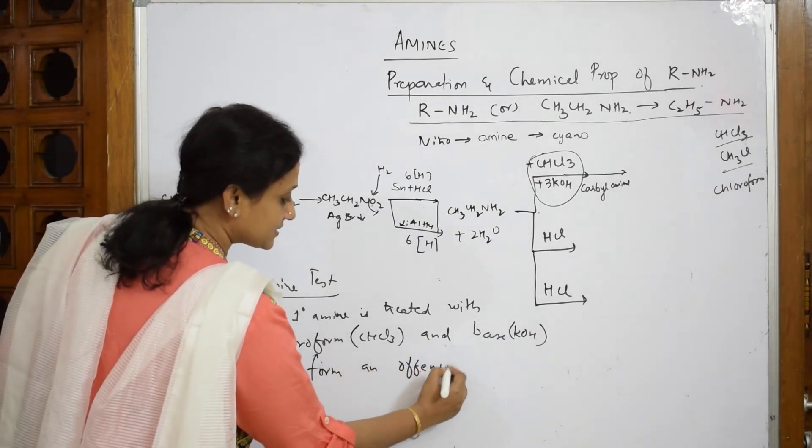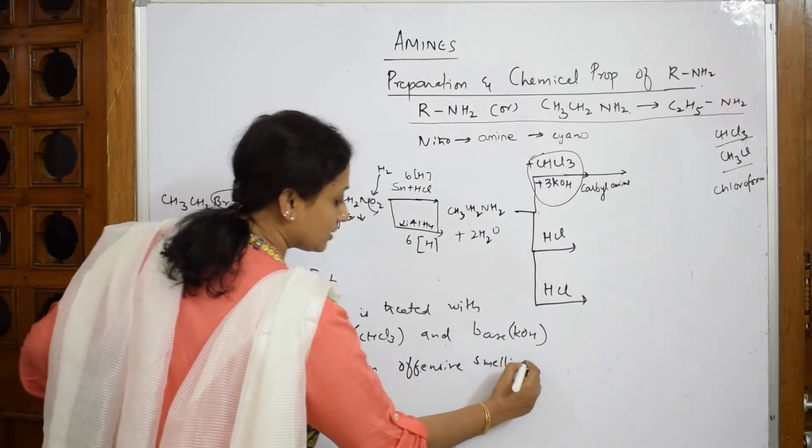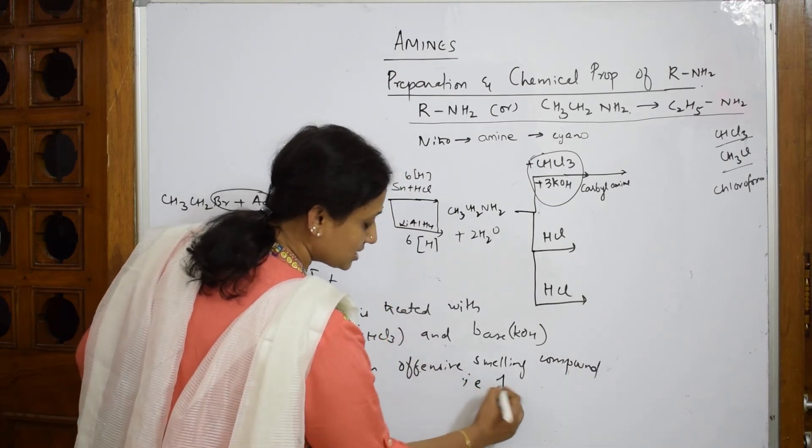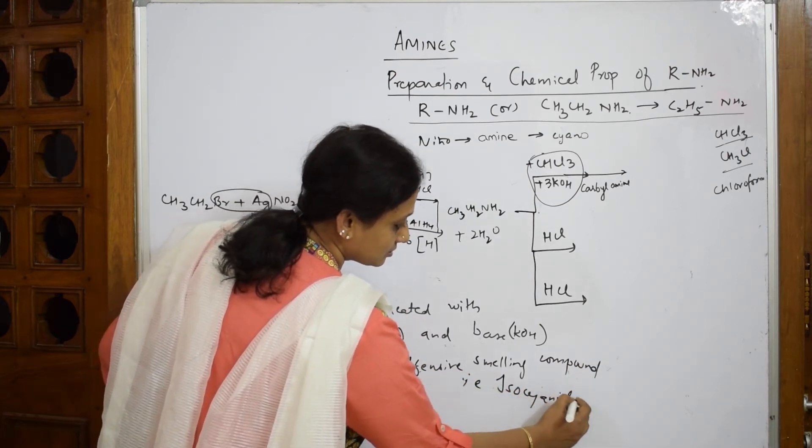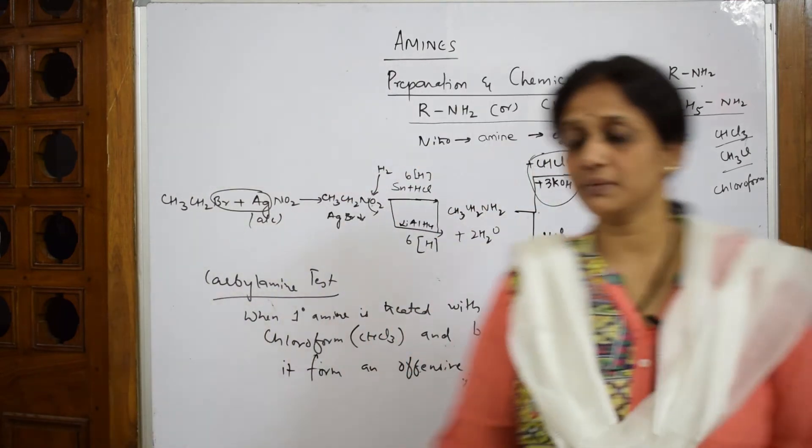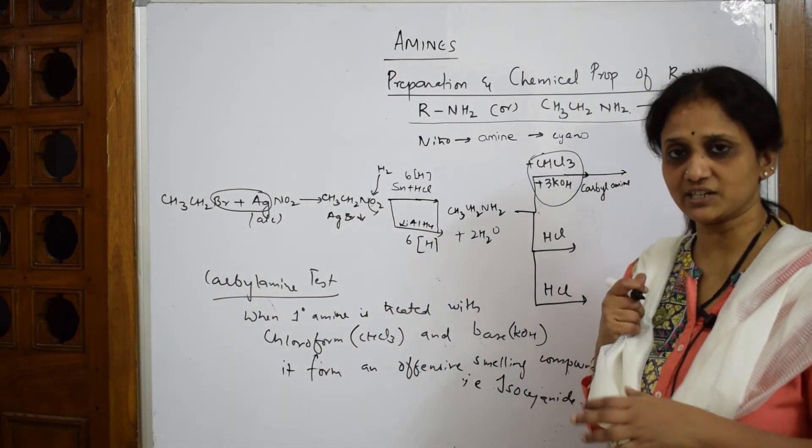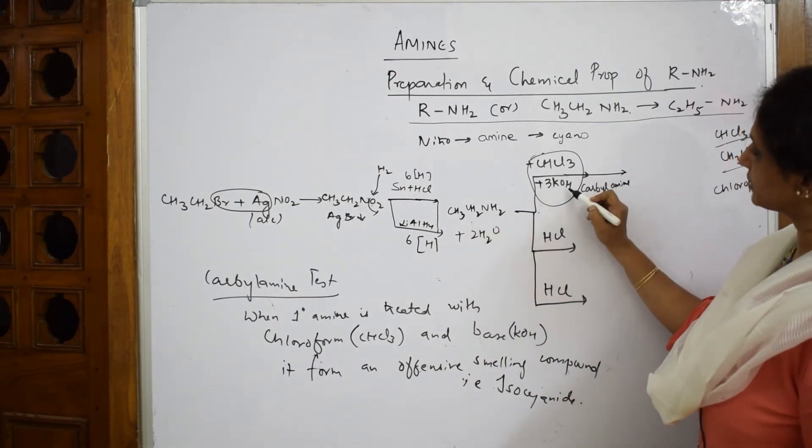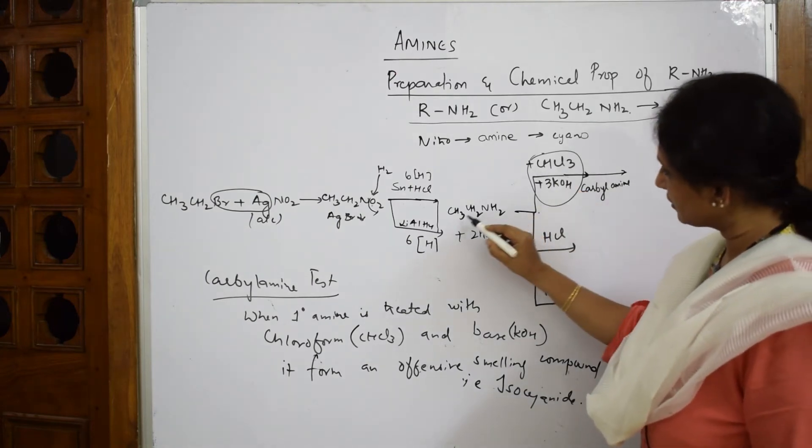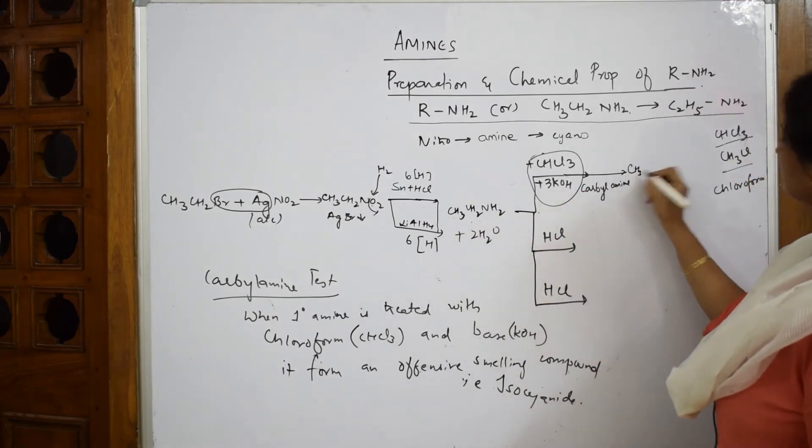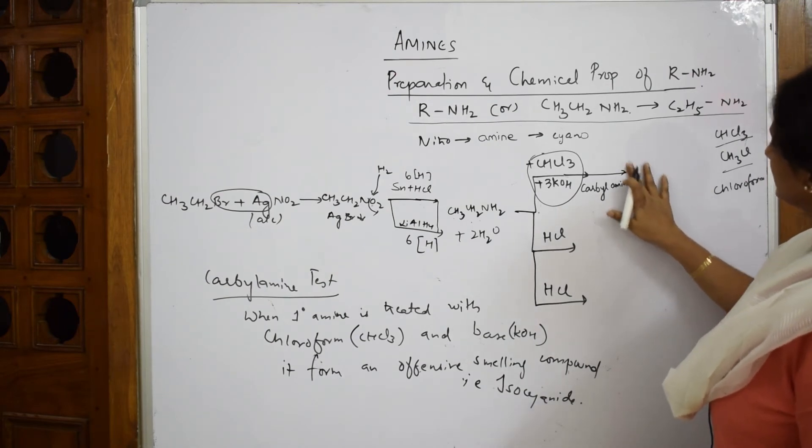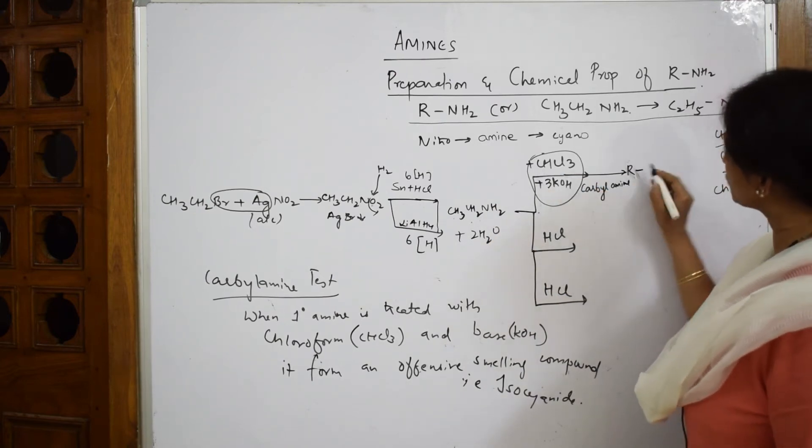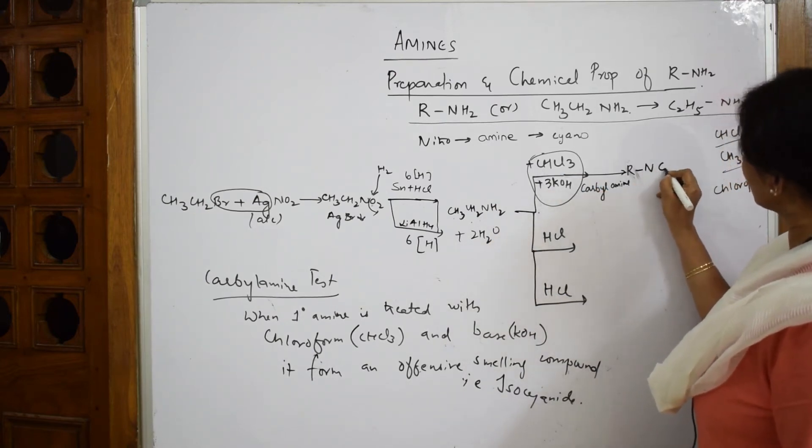The offensive smelling compound is isocyanide. That reaction is called carbylamine. I will also explain the carbylamine reaction. As of now, simple: remember this - when it is treated with chloroform KOH, nothing to do, write the whole thing like this. Let me write it as R for you better: R-NH2.